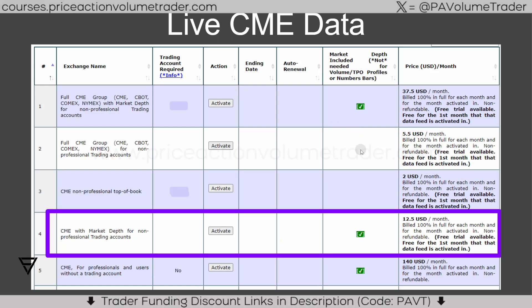After you select your package, you're going to have to activate live CME data, because if you don't, you're going to be trading with data that is 10 minutes behind. The best and cheapest option is CME with market depth for non-professional trading accounts. This is what I use for both my real live futures accounts and my trader funding accounts, and you can see it has a cost of $12.50, which is charged on the first of every month.